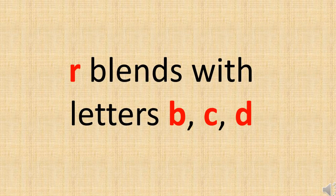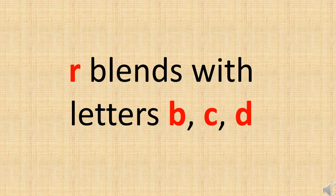So children, today we have learnt R blends with letters B, C, and D. With B we got the br sound, with C we got the cr sound, and with D we got the dr sound. We have seen a few words also. I am sure you are going to make new words with the same letter and R blends. Till then, keep practicing, make new words and have fun. Bye-bye.